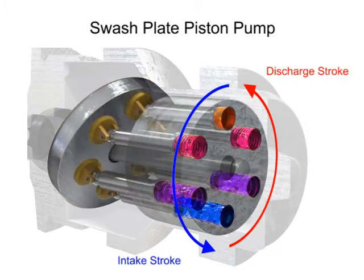Piston pumps, in general, are manufactured with closer internal fits than other pumps. This means that internal slippage can be less, so that they operate with reasonable efficiency at pressures both too high or too low for the operation of other pumps.